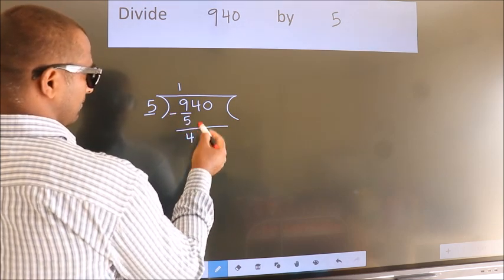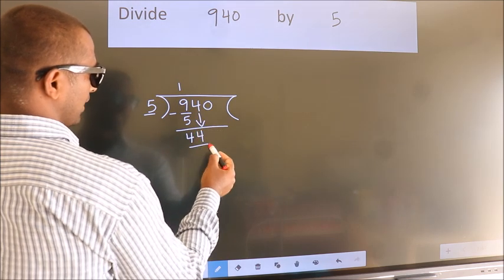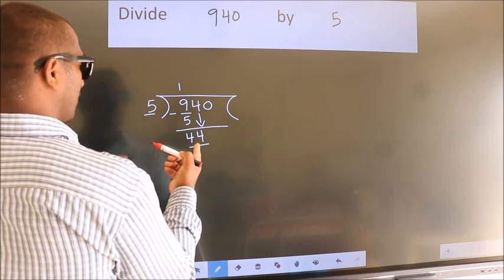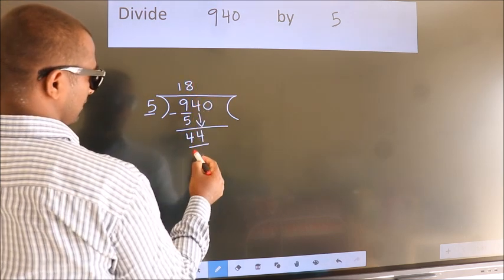After this, bring down the beside number. So 4 down. So 44. A number close to 44 in 5 table is 5 eights 40.